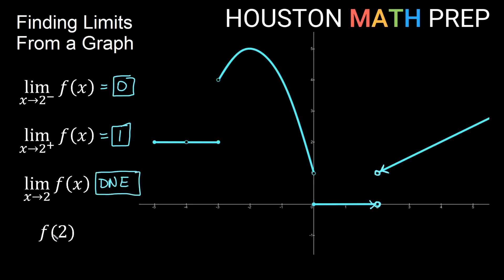What is the y value exactly when x equals 2? Here we have an open dot — a hole — so it's not defined. Here also an open hole, not defined. And there's no filled-in dot above x equals 2 anywhere, so since we only have empty holes at x equals 2, f of 2 is actually undefined.